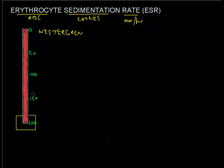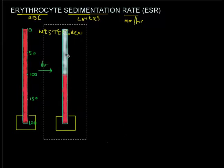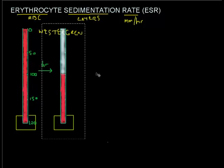What you would do is fill up one of these Westergren tubes with blood and allow it to stand vertically for a period of one hour. Over that period of one hour the blood cells will settle out, and after one hour the tube looks quite different from how it looked at the beginning.